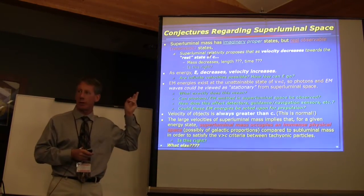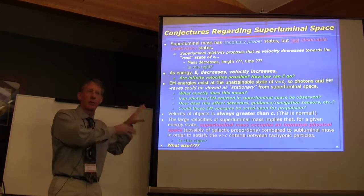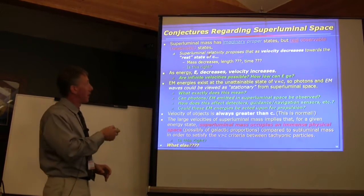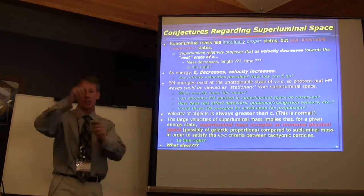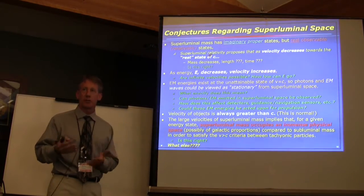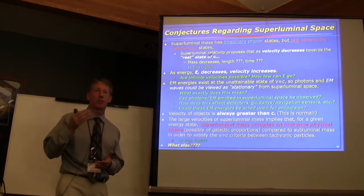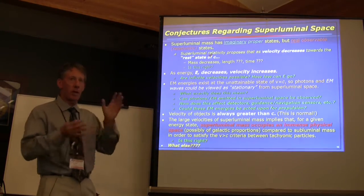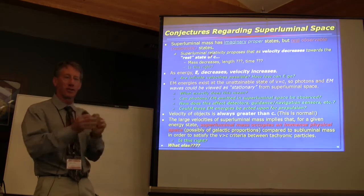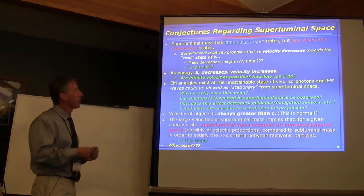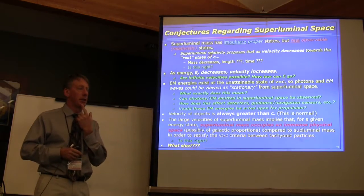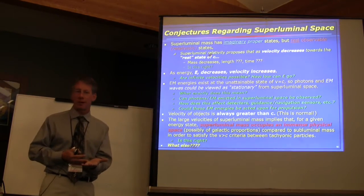That is algebraically correct when you look at the Pusher paper I mentioned at the very first slide — it's complete algebra. The imaginary proper mass gives you the square root of negative one, the i's cancel, and you have real observable mass that can exist in superluminal space, but it has an imaginary rest mass, making it hard to use relativity to calculate for those things.